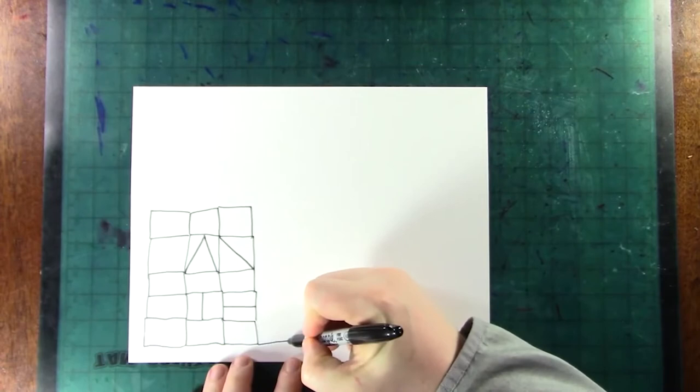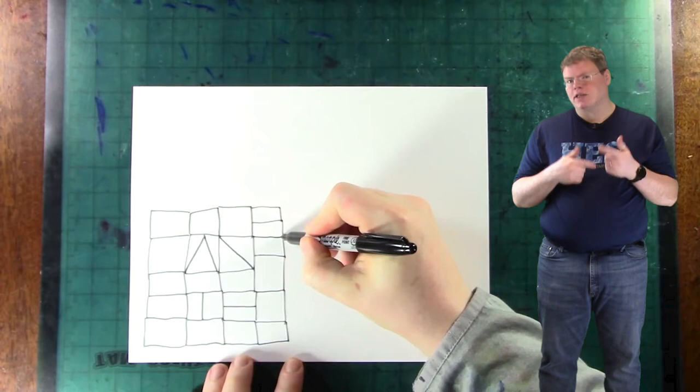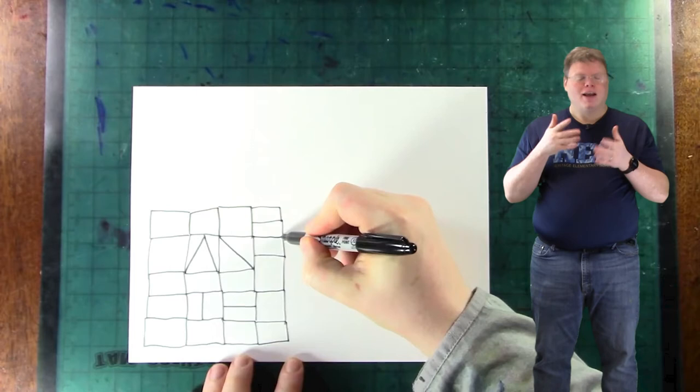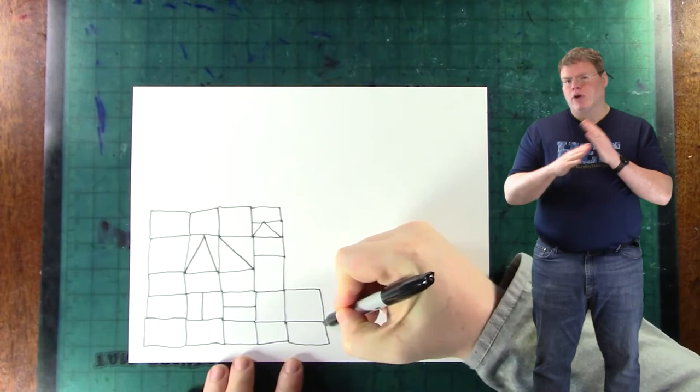Do you see how we keep using the same shape again and again? It's just rectangle, rectangle, rectangle. That's called a pattern. When we use patterns in our artwork, it makes them easier to look at and more interesting. But if that's all we did, it would be a little bit boring. That's why we're not stopping with just rectangles. We're also breaking those rectangles up into other shapes.